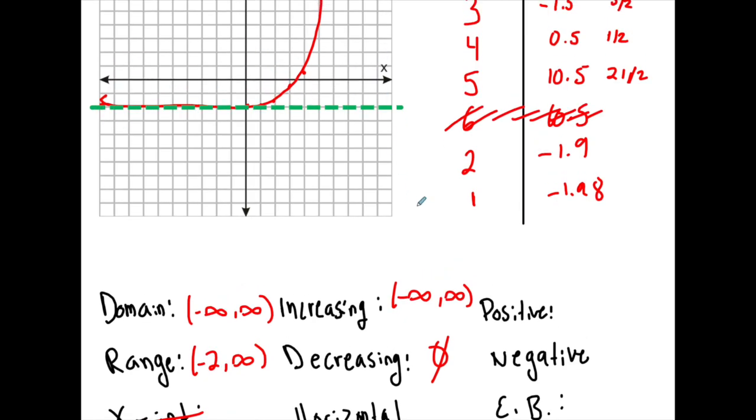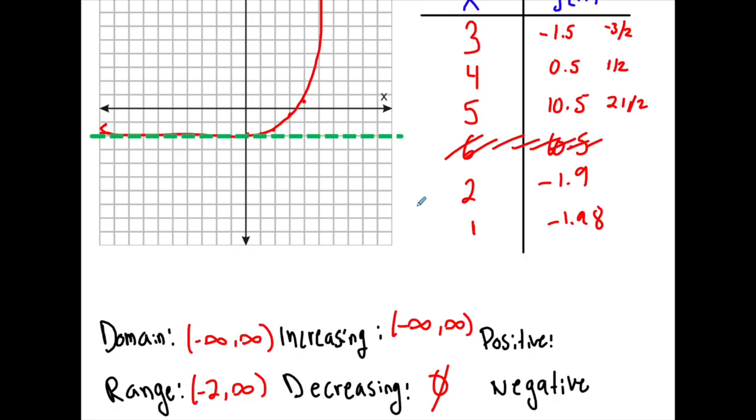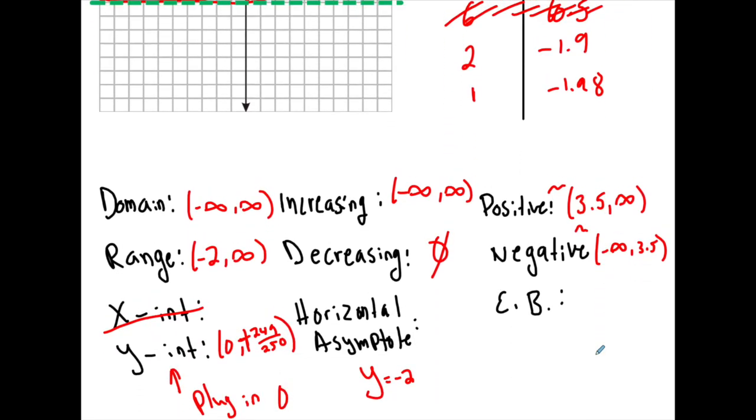Where is it positive? So, positive and negative are pretty hard to do. So, let's just do a guesstimate. It looks positive from about 3.5 to infinity, and it looks negative from negative infinity to 3.5. Here's the thing. I'm generally not going to ask you this unless it's an exact number, and if it's not an exact number, then you can do a guesstimate as long as it's a reasonable guesstimate, kind of like what I did here, based on my graph.